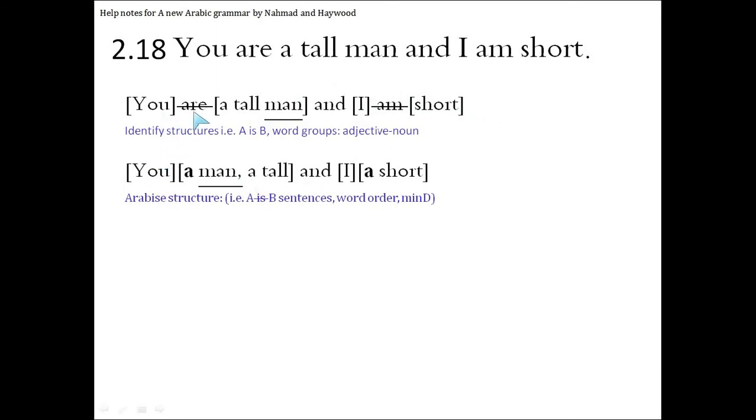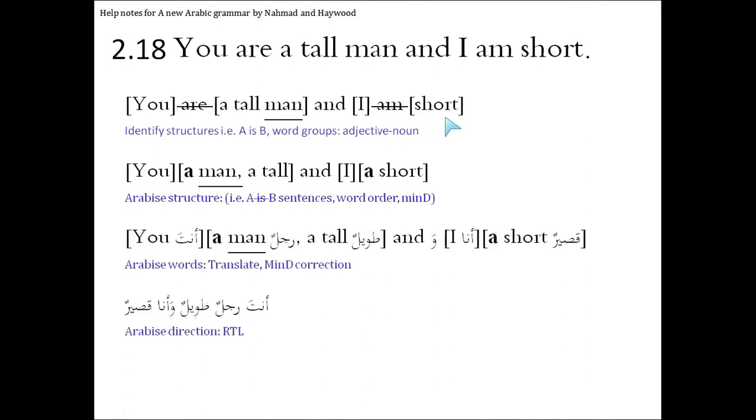The 'you' stays the same. We eliminate the 'are'. 'A tall man' will become 'a man, a tall'. The indefinite 'man' needs to take an indefinite article, but that's a single word in Arabic. 'And' stays the same. 'I' stays the same. The 'am' is eliminated because al-jumla al-ismia doesn't need it, and 'short' will take an indefinite article: 'a short'.